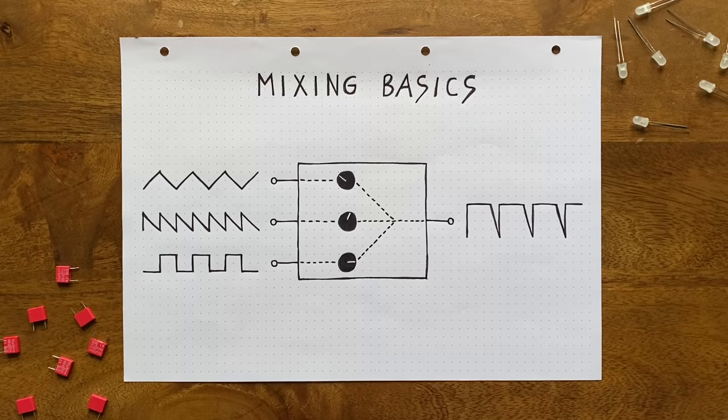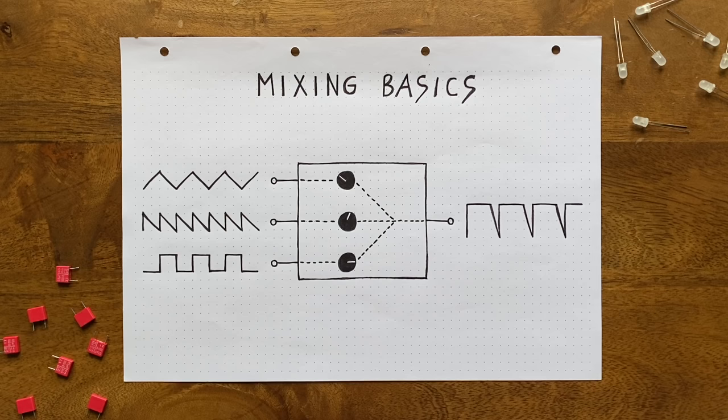Ideally, we'd also want to adjust the individual volume levels for every input signal. And once that works, we'll talk about how we can abuse a couple of diodes to implement nice, warm distortion on a separate output.